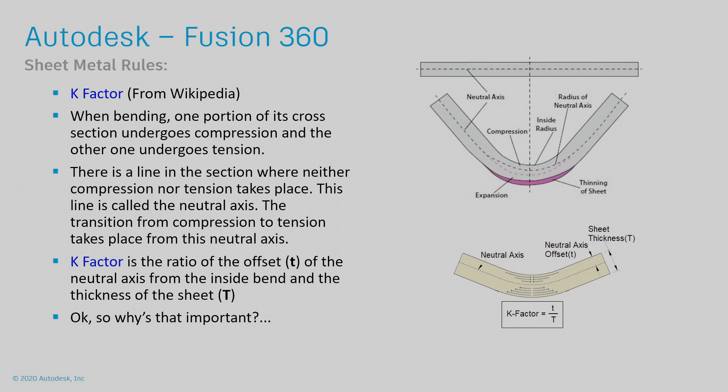Now there's a line along that section that neither compression nor tension takes place, that's called the neutral axis. And now we can determine the k-factor by the distance or a ratio of the distance between the center axis of the bend and that neutral line over the thickness.